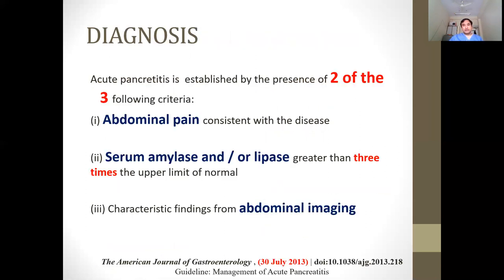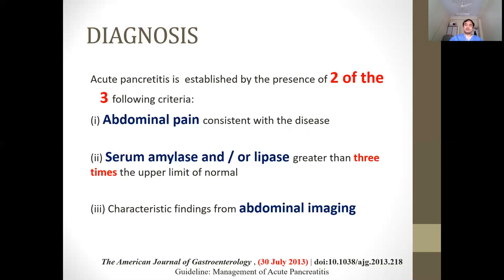To diagnose acute pancreatitis, three criteria are used: first, abdominal pain consistent with acute pancreatitis; second, biochemical elevation of serum amylase or lipase; third, characteristic findings on abdominal imaging. Ultrasound is the imaging of choice in the emergency — it is non-invasive and safe. If gas distension obscures the pancreas, other imaging may be needed. If two out of three criteria are met, it is a case of acute pancreatitis.